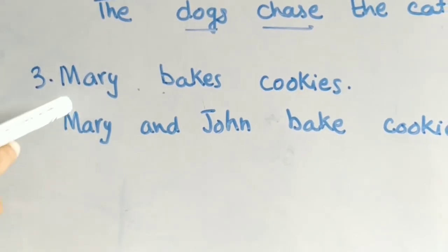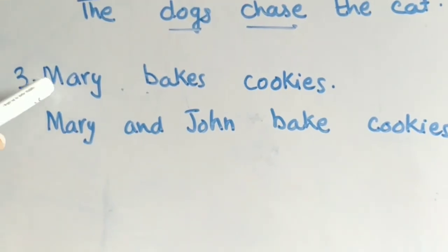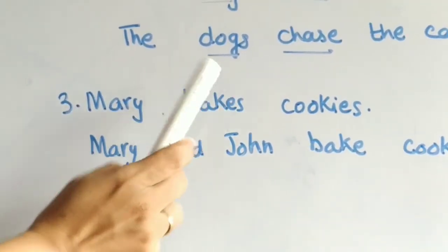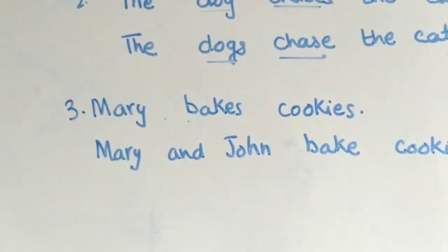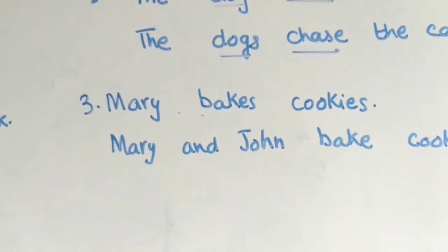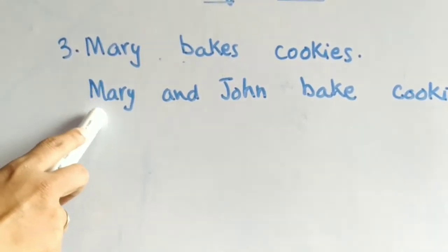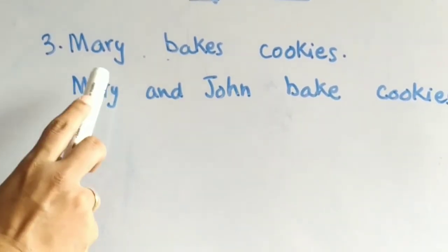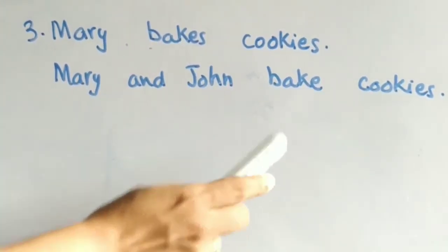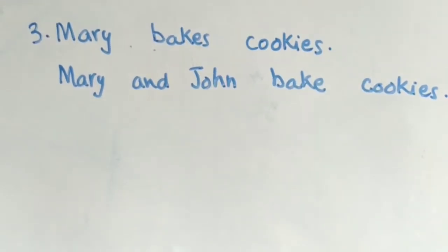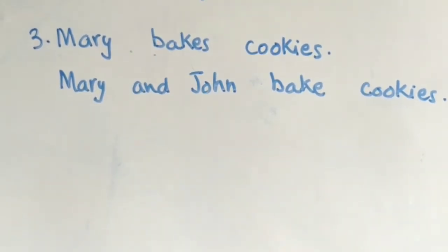Now the third example: Mary bakes cookies. Mary is one person — singular — so we add S to the verb. Baking is the action, so we add S to get 'bakes'. Now Mary and John — there are two people, that is plural — so Mary and John bake cookies. The S has been removed. So this is what we have learned today about more verbs: simple present.